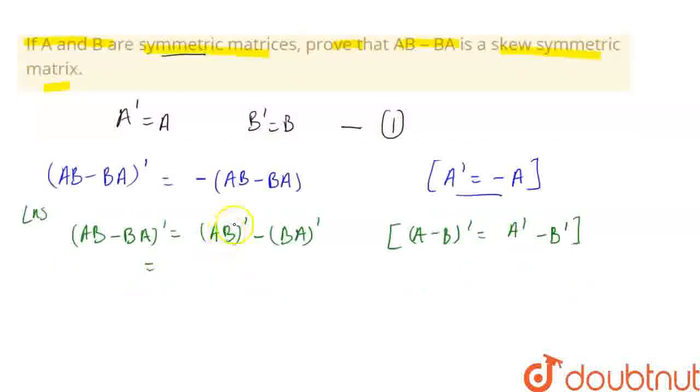So, AB transpose can be written as B transpose into A transpose minus A transpose into B transpose. We have an identity for this that AB transpose is written as B transpose into A transpose. This is the identity.